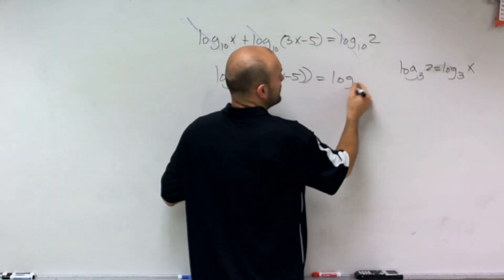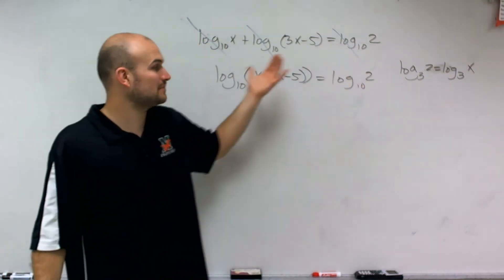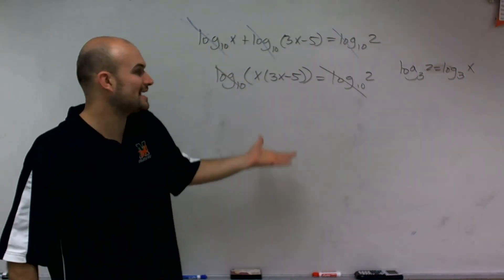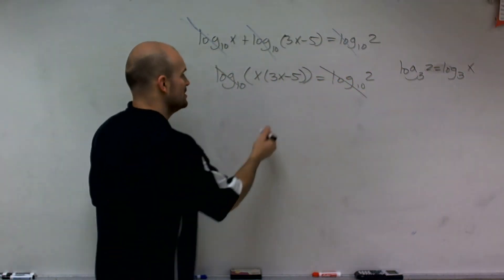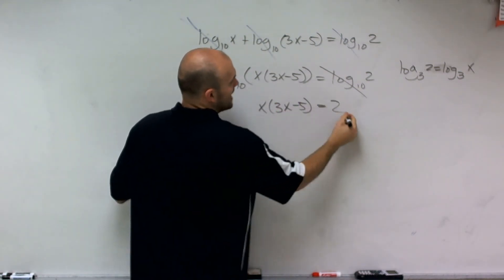So now, what I notice is now that I have a logarithm equal to a logarithm with the exact same base, now the logarithms don't matter. What I know is that what I'm evaluating for on each logarithm has to equal each other. So therefore, I can just say x times 3x minus 5 is now equal to 2.